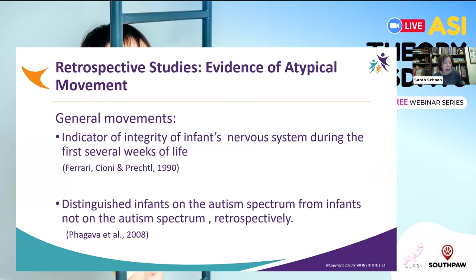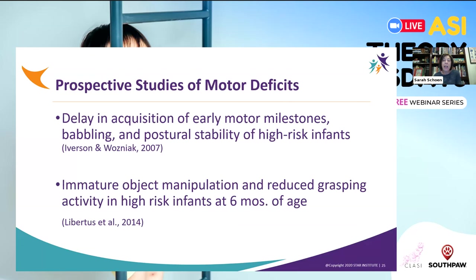Atypical movement patterns have been suggested as an indicator of the integrity of the infant's nervous system. Such atypical movements include descriptions of the quality and complexity of movement patterns used, as well as general descriptions of motor clumsiness or lack of coordination. When identified retrospectively, the infants who later received a diagnosis of autism could be distinguished from those who did not. There is also a growing number of prospective studies suggesting that early motor milestones such as babbling and postural stability are impaired in high-risk infants, likely due to having a sibling with autism. A lack of mature object manipulation and grasping has also been noted.